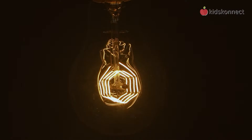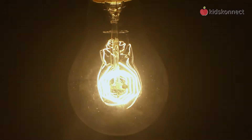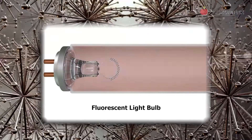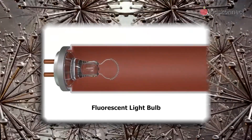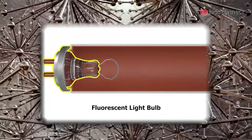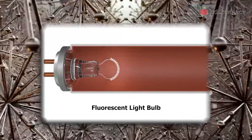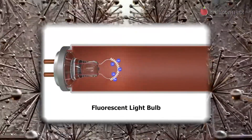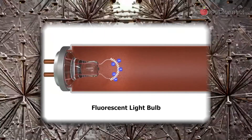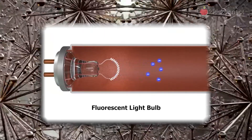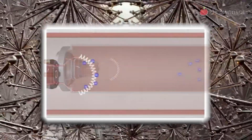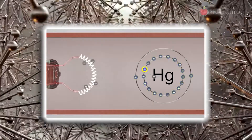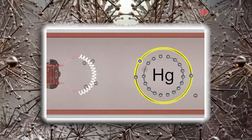Basically, electricity is a form of energy produced by the flow of electrons from one atom to another. This means that whenever a conductor connects a negatively charged body to a positively charged body, the excess electrons of the negative body flow to the positive body to create balance.